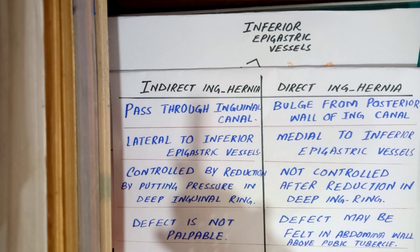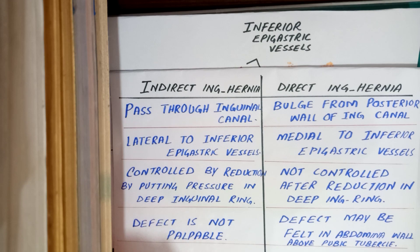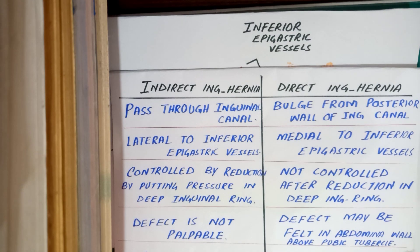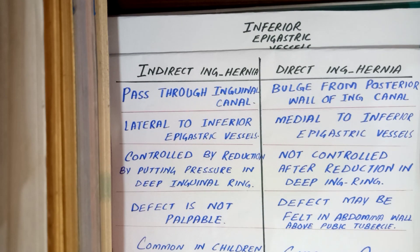The fourth difference is that indirect inguinal hernia is not palpable, because anteriorly there lies the aponeurosis of the external oblique muscle. In direct inguinal hernia, the defect can be palpated in the anterior abdominal wall above the pubic tubercle, as it lies anteriorly and passes directly through Hesselbach's triangle.